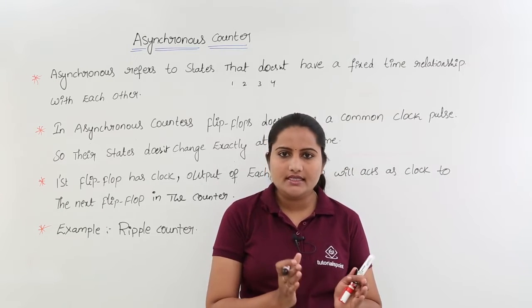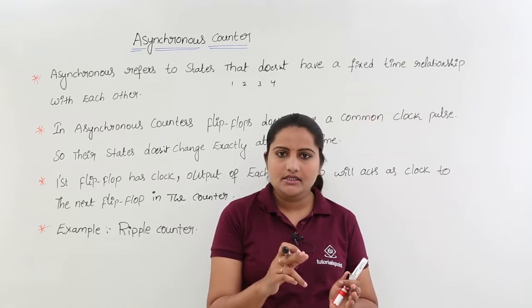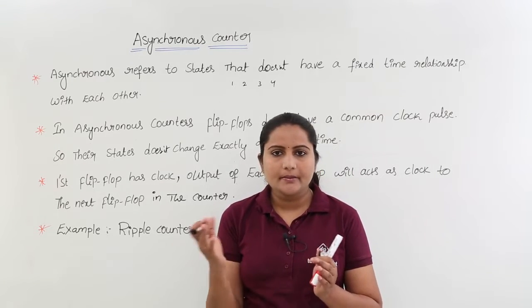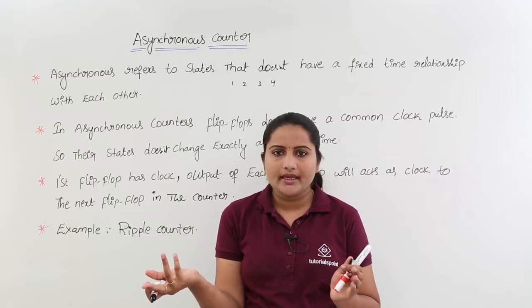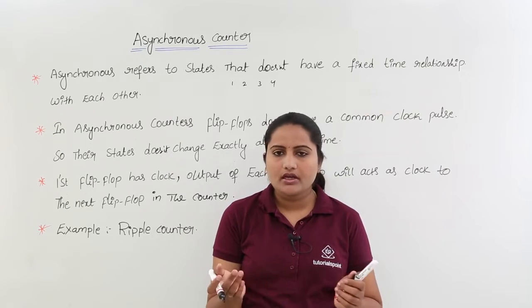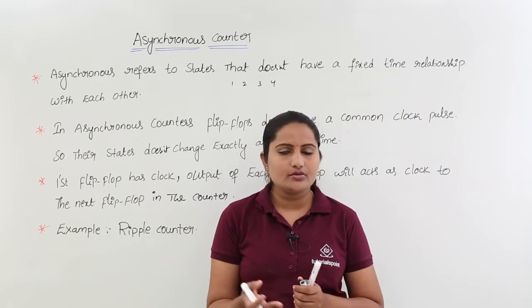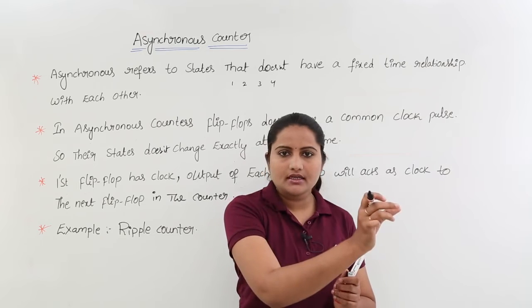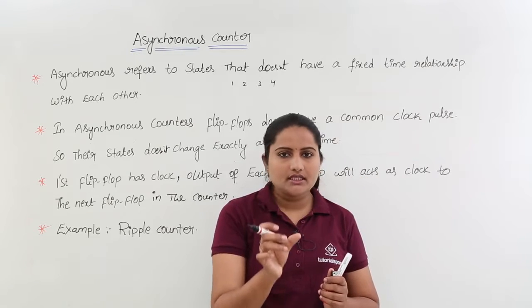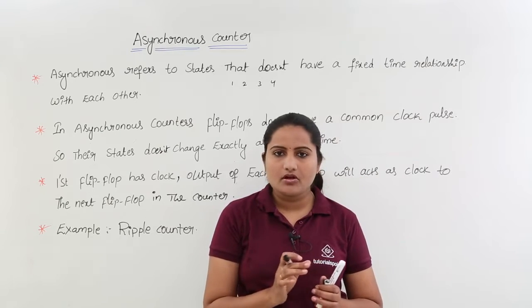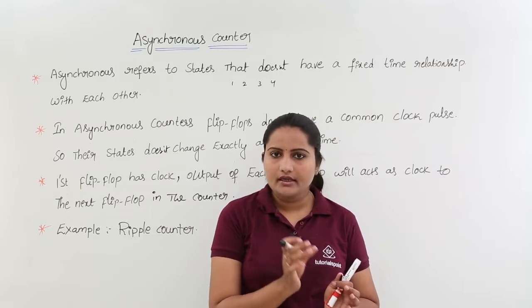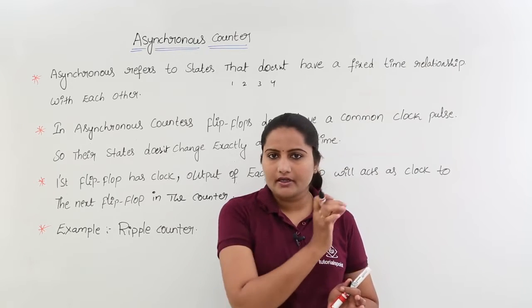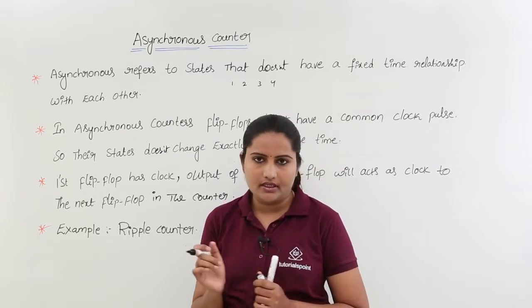But since we are not giving a similar clock pulse here, each flip flop is not giving output at the same time. For example, in one clock pulse if the first flip flop gives output, the second flip flop may or may not. Because we are not using a similar clock pulse, for a particular clock edge only any one flip flop will provide output.